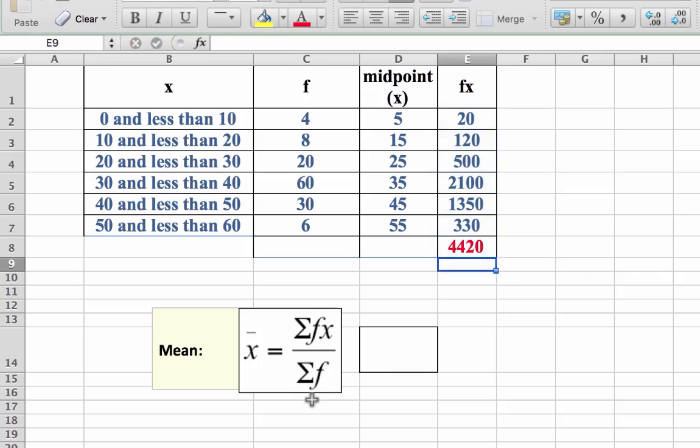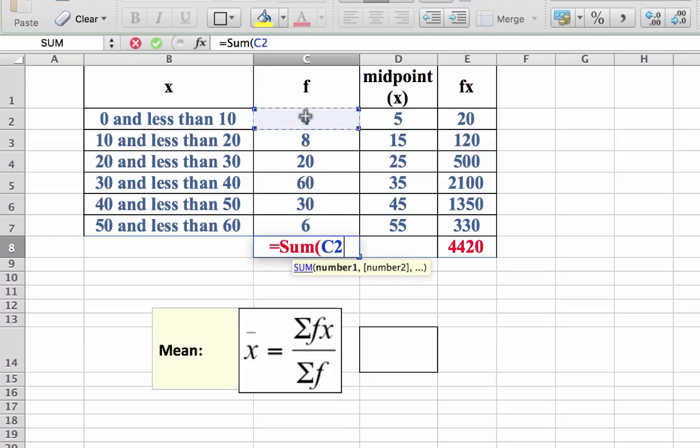The denominator for the mean is the sum of f. So again, we just get equals sum, open your bracket, highlight the first figure, colon, last figure, bracket and return. And we have the sum of f.